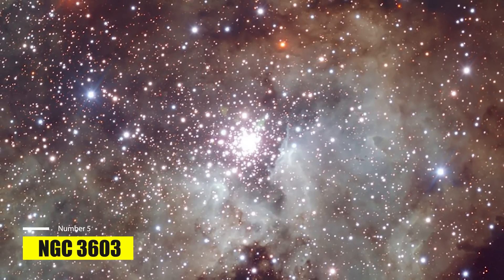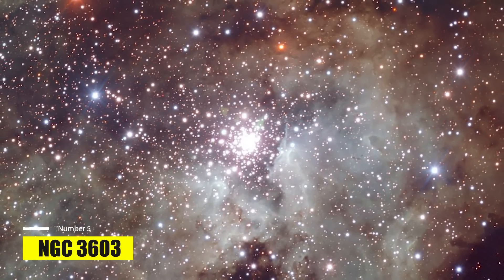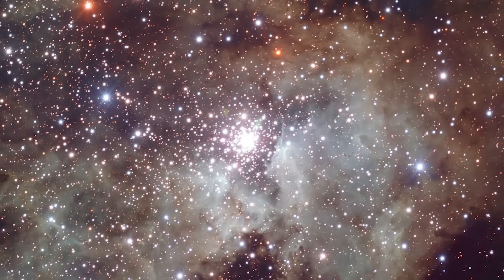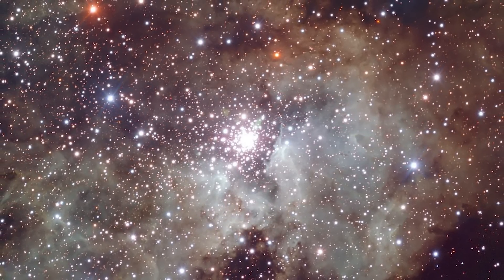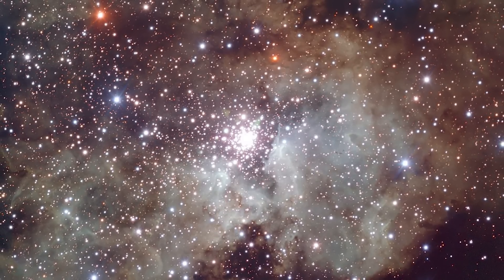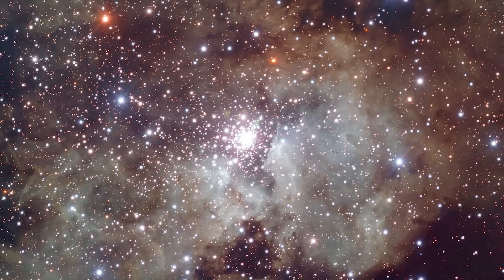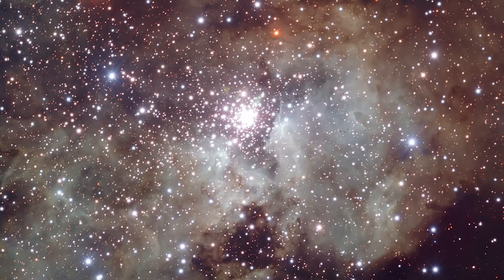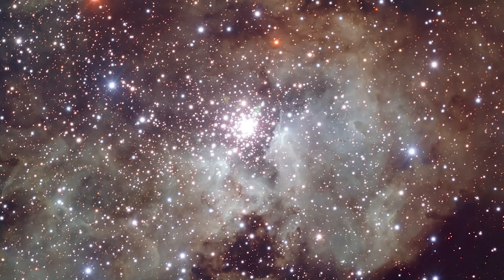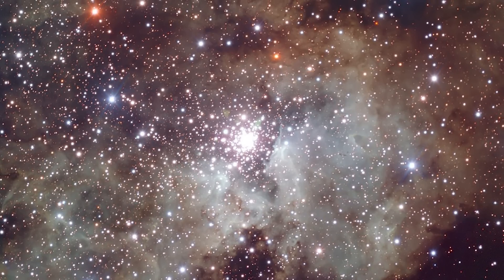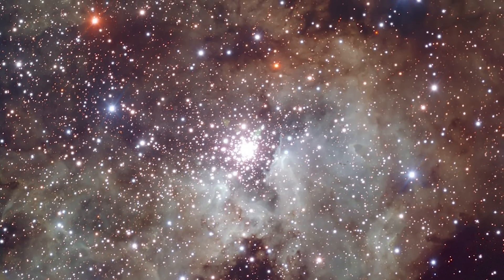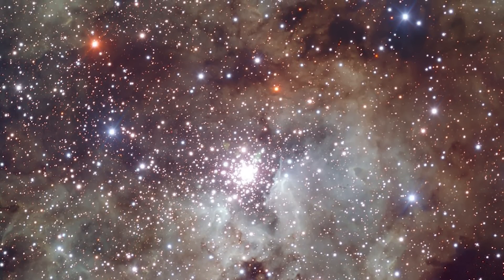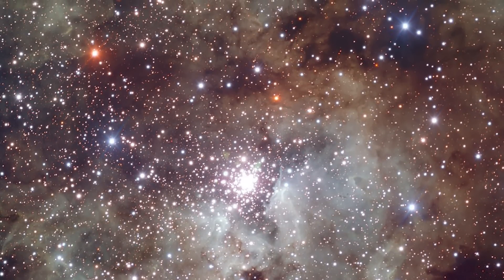NGC 3603. NGC 3603 is a starburst region in a cosmic factory, characterized by its exceptionally active star formation. As the nearest region of its kind in our galaxy, located approximately 22,000 light-years from the Sun, it provides scientists with a local testbed to study the intense star formation processes commonly observed in other galaxies, which are challenging to analyze in detail due to their vast distances, situated in the Carina Sagittarius arm of the Milky Way and around 20,000 light-years from Earth.